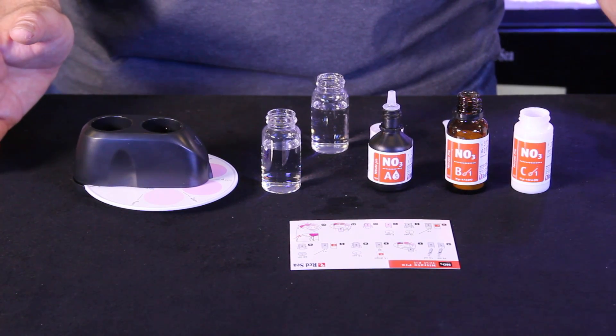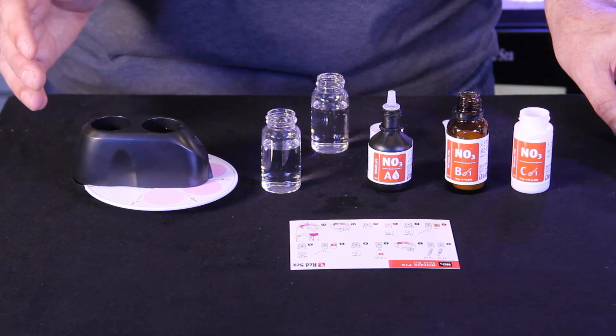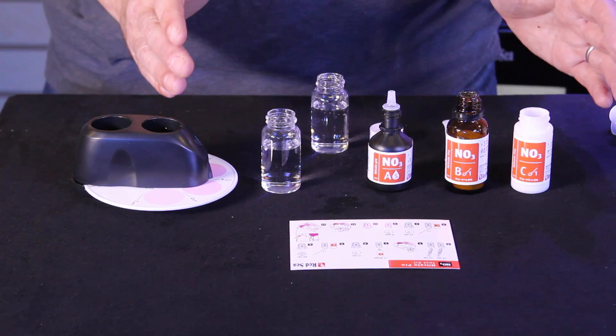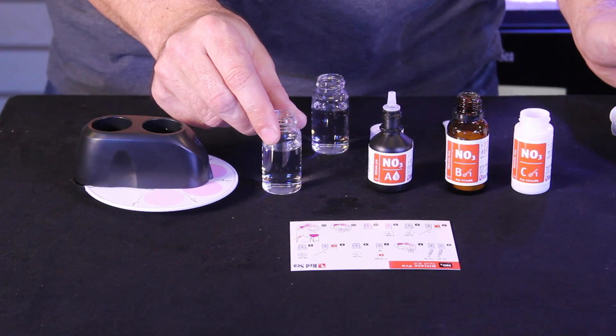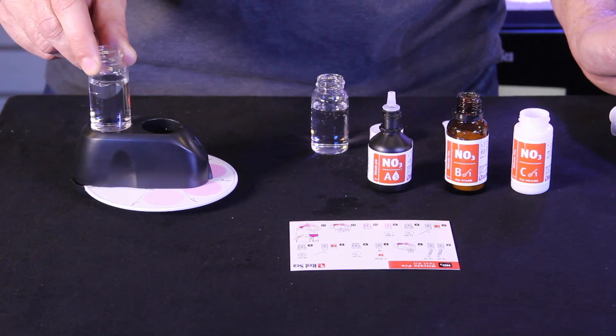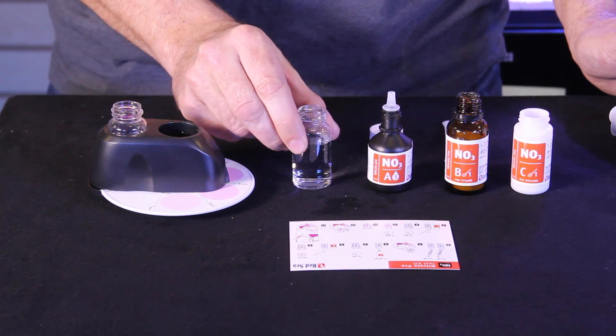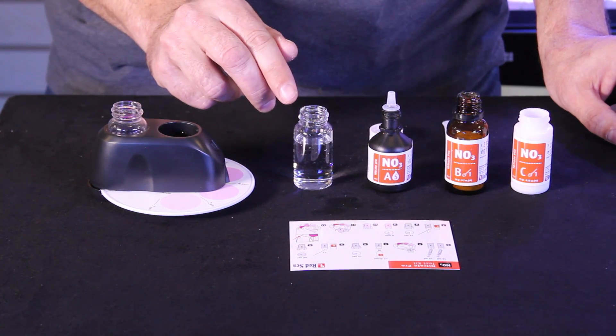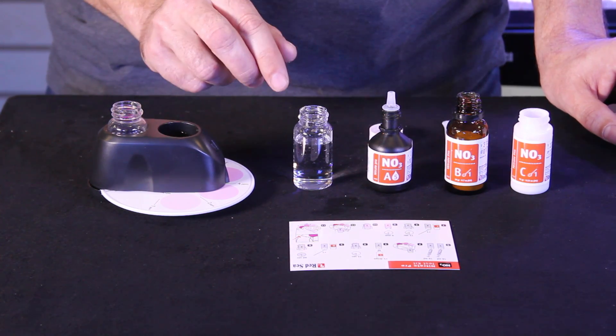All right we've completed our Red Sea Nitrate Pro test using the low range test and we've found that our levels are over four parts per million. So we need to repeat the test using the high range variation. We're going to place this sample vial with water from the aquarium 16 mils in the outer side of our color comparison wheel. Now this vial we've filled with only one milliliter of water from our aquarium and 15 milliliters of RO water.